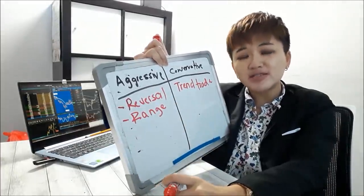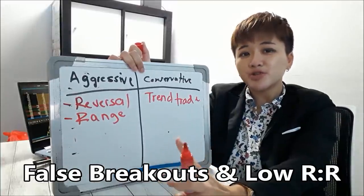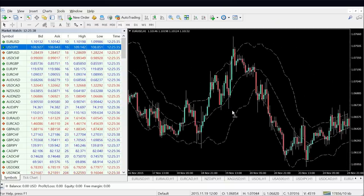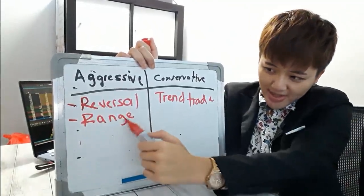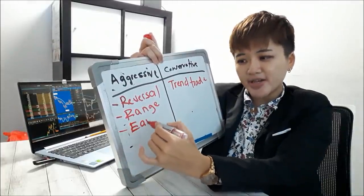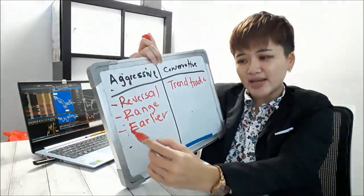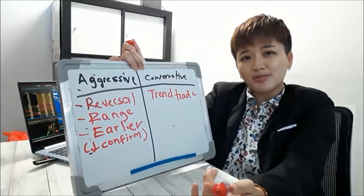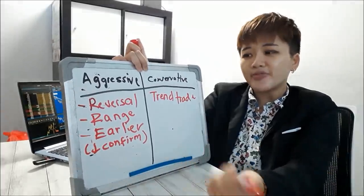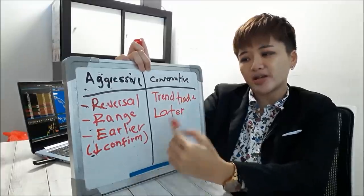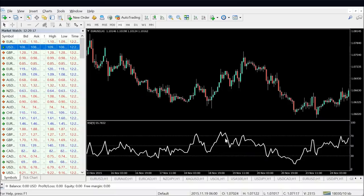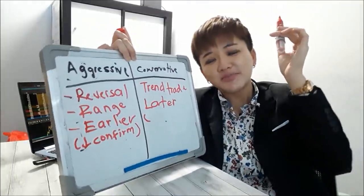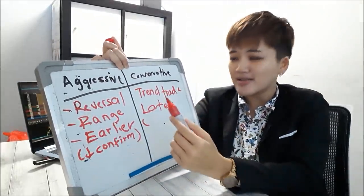If you're aggressive, you might also go into range trading — trading the sideways market — but this is more risky because there are a lot of false breakouts and the risk-to-reward ratio is not that good. With reversals, you can have a good risk-to-reward ratio and use a trailing stop. An aggressive trader would also enter earlier, requiring fewer confirmation indicators — maybe just one or two. Conservative traders need more confirmations, so they may use three momentum indicators and wait until all give the same signal.